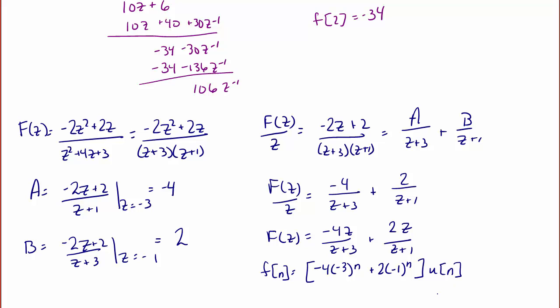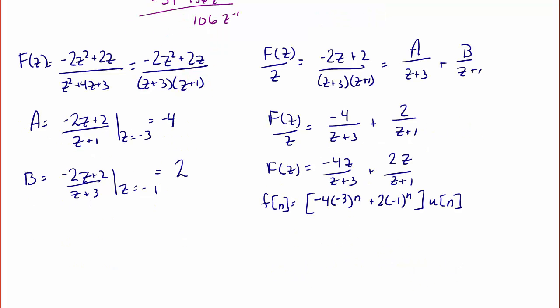Now let's confirm that this is actually equivalent to the answer we got before. F of 0 is equal to negative 4 plus 2, which equals negative 2 — check, that's the same as what we got before.